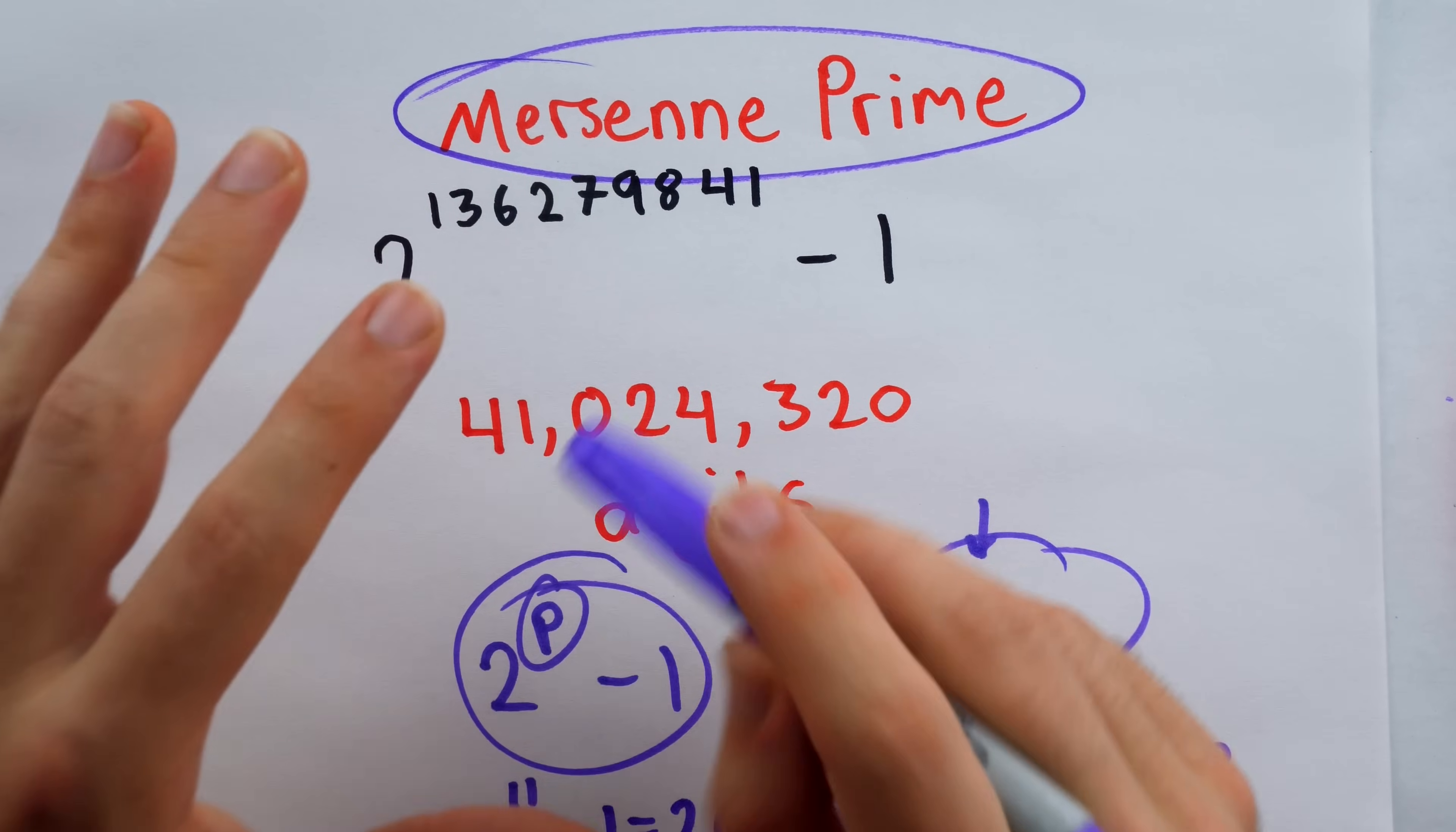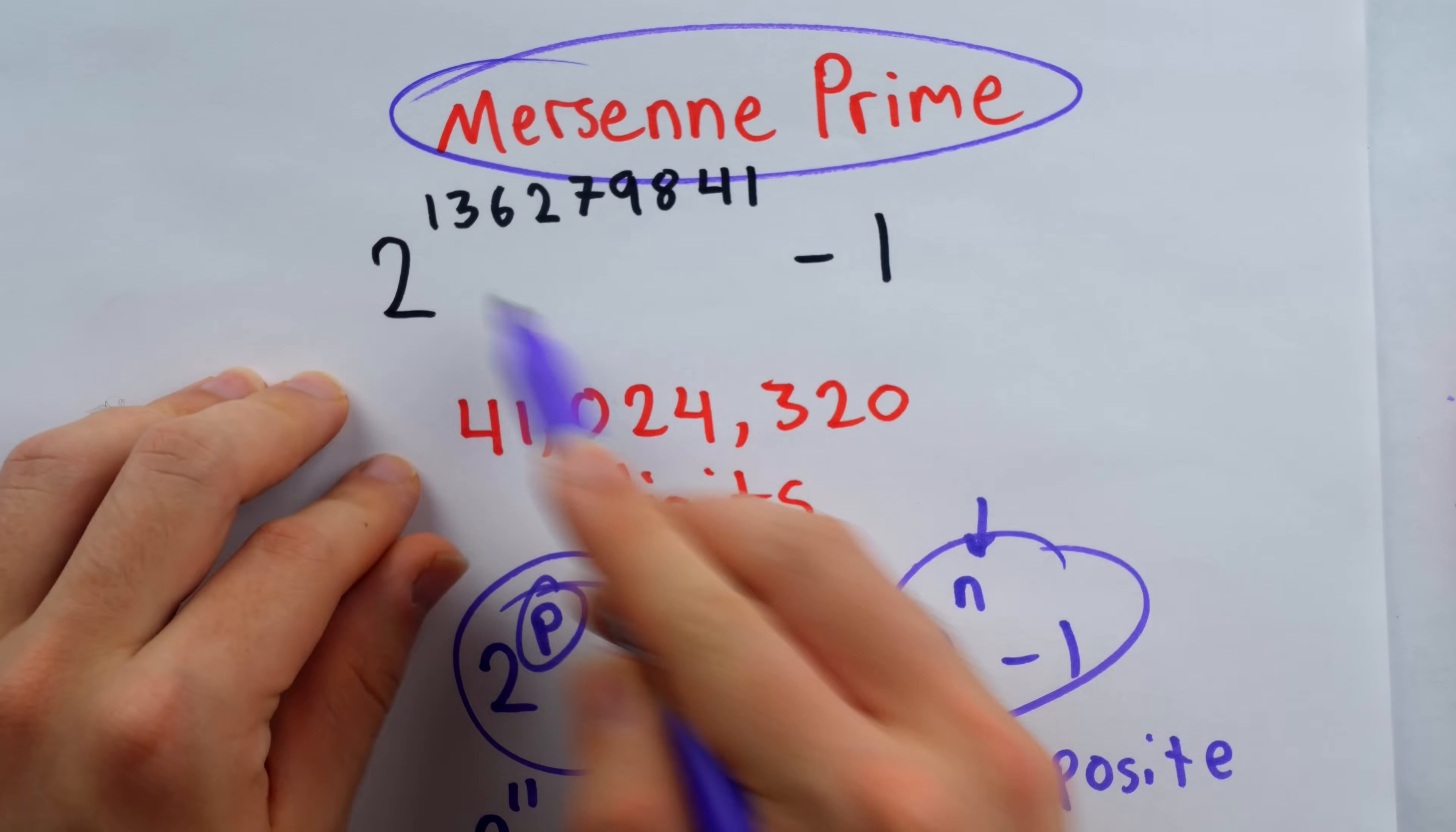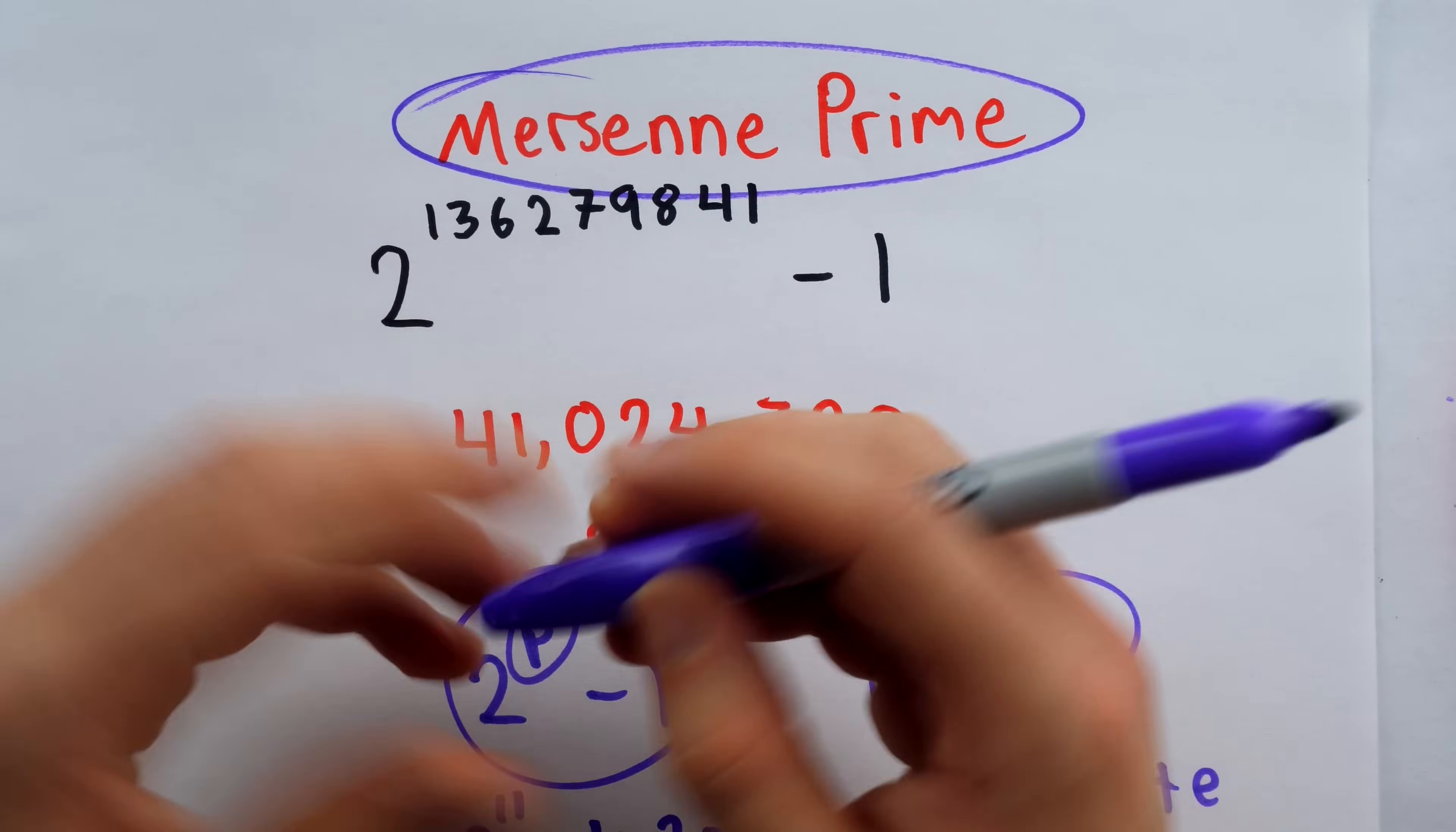But these numbers happen to be a bit easier to check. They're one less than a power of two, which makes them relatively speaking easier to work with.